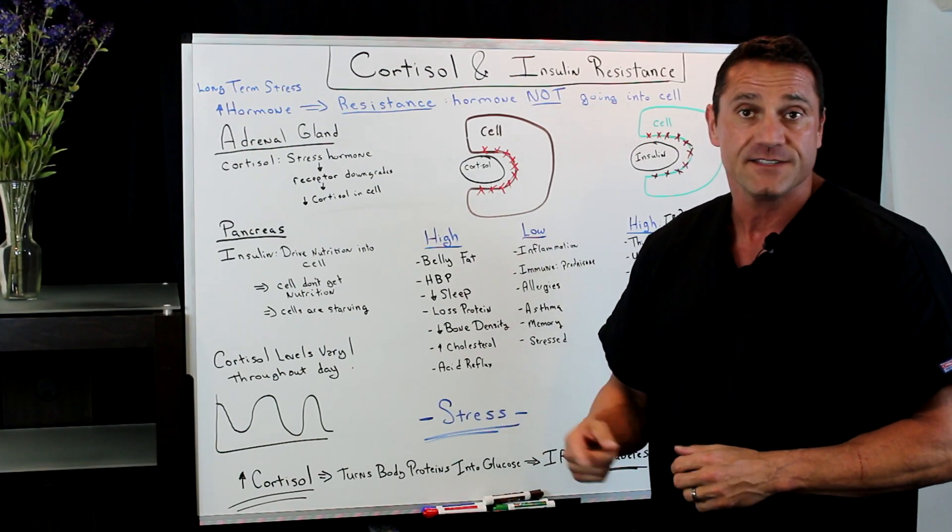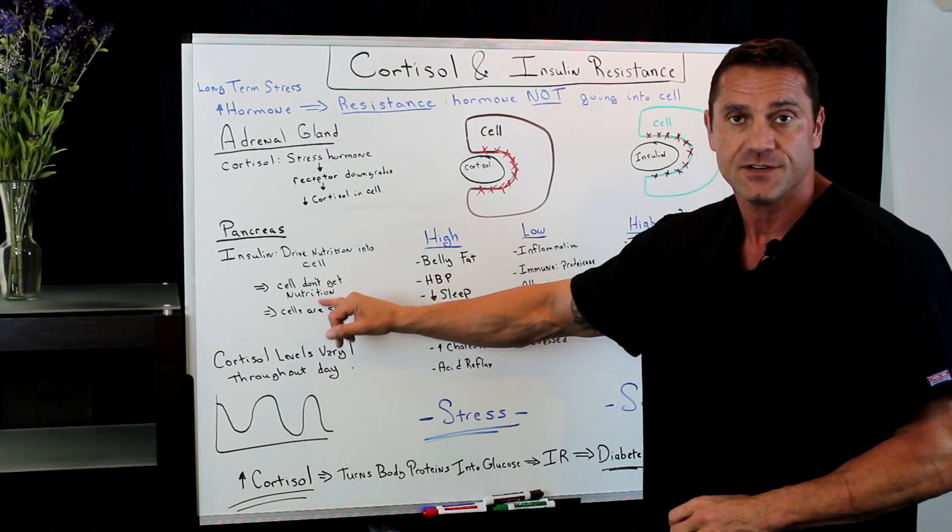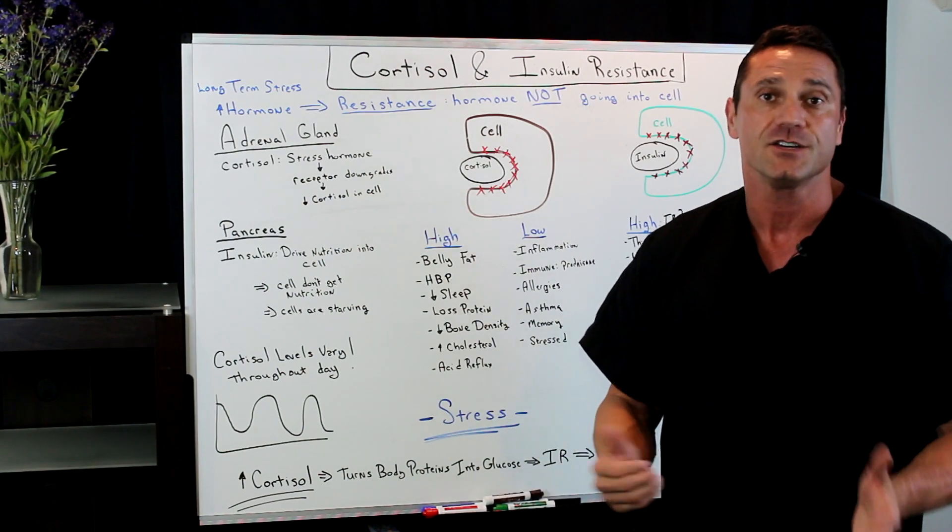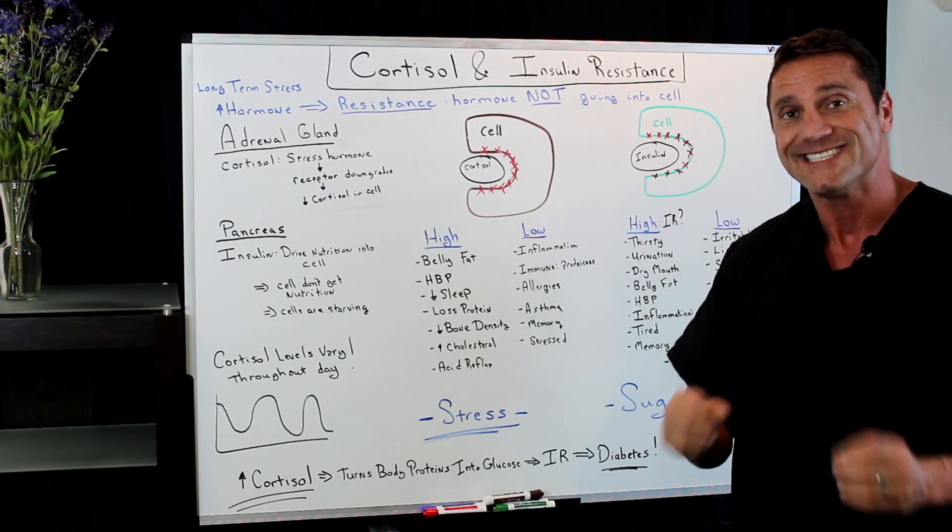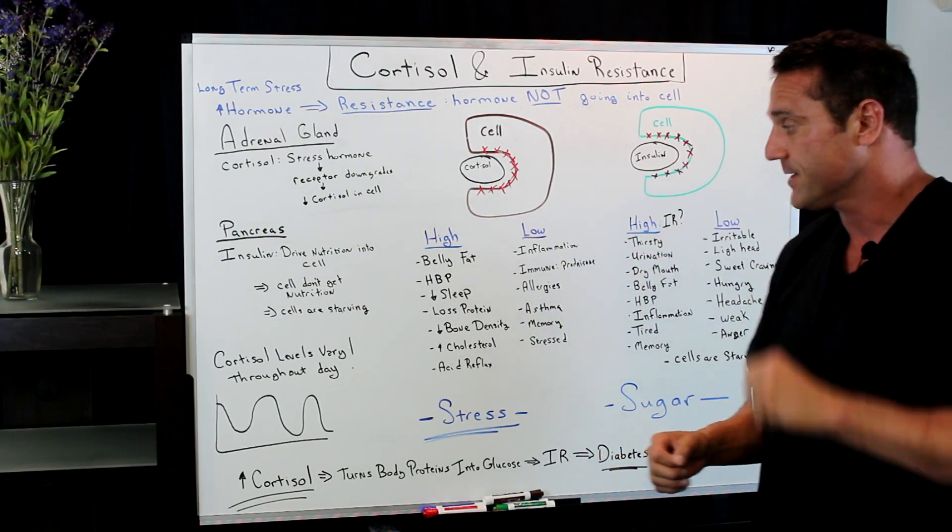What happens when you become insulin resistant? The cells don't get nutrition and they get starving. Your cells are starving because you have too much insulin floating around the blood that's not getting into the cell.